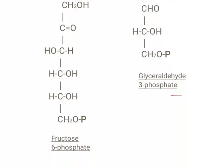Fructose-6-phosphate and glyceraldehyde-3-phosphate can be further catabolized through glycolysis and the citric acid cycle. Glucose may also be synthesized from these two compounds.